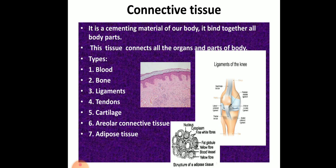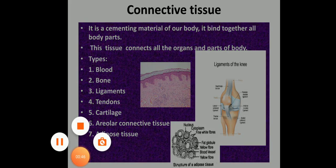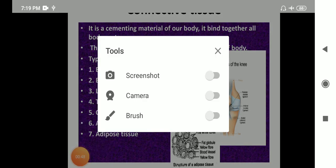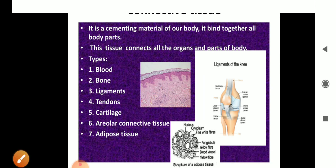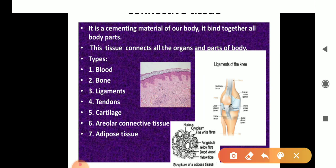Now, what is connective tissue? The word 'connective' means to join together — to make a connection. This tissue acts as a cementing material between body parts, like cement joining things together. It joins all the body parts together, which is why it is called connective tissue. It is present all over the body and connects all organs and body parts.